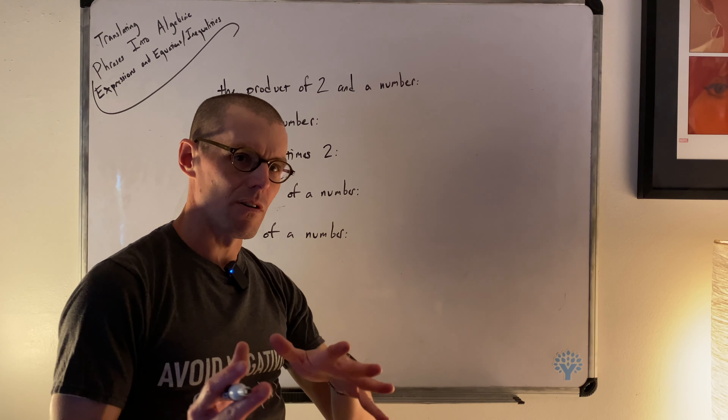Big clue: the word 'sum' means addition. The sum of two and a number is two plus x — or x plus two. What's new here is 'is six.' Whenever you see the word 'is' in English, that translates to an equals sign. So 'is six' becomes '= 6.' The sum of two and a number is six becomes x plus two equals six, or two plus x equals six.